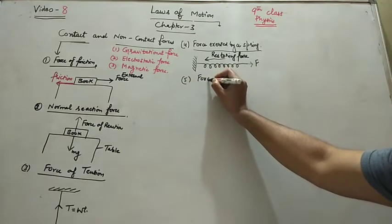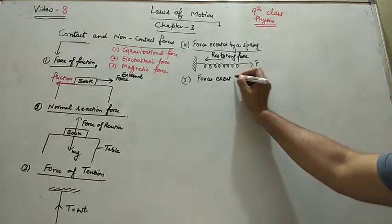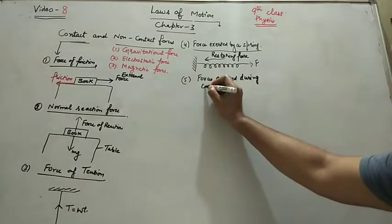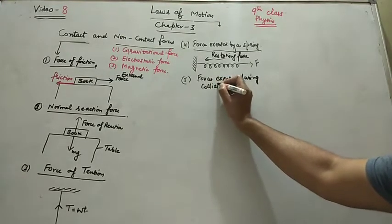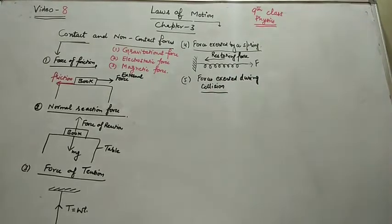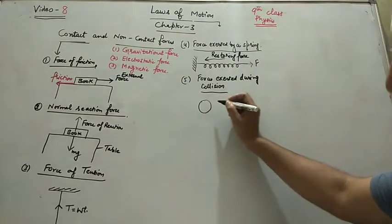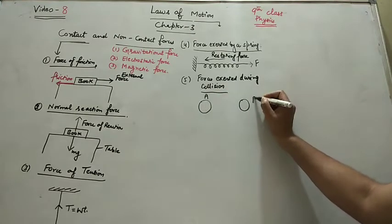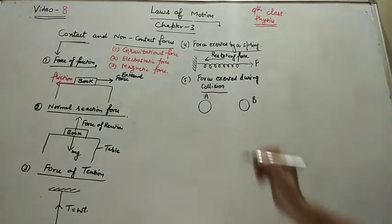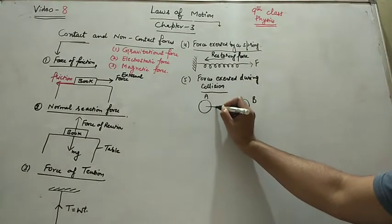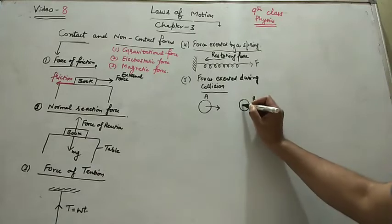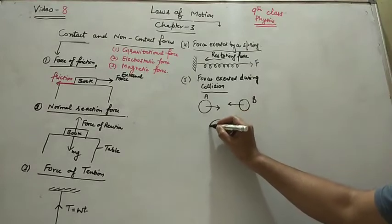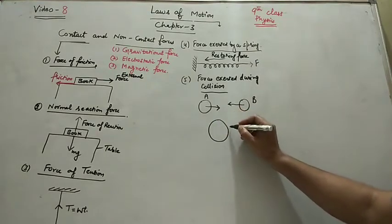For that, you can consider two bodies, A and B. A is coming towards the right side, and B is coming towards the left side. Now, when they will collide, A and B.